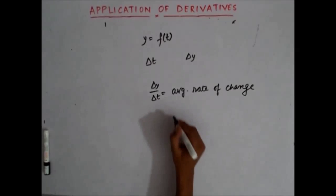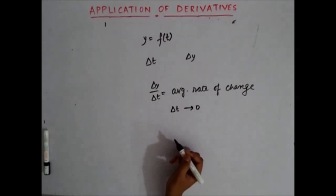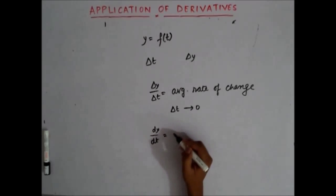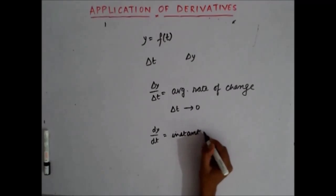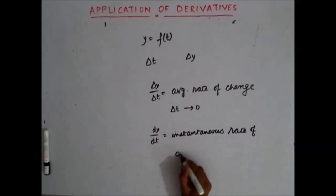Now when this delta t approaches zero, let's say delta y is also infinitesimal small quantity, and this delta y by delta t becomes dy by dt, and now the average rate of change gets converted into instantaneous rate of change.